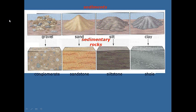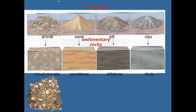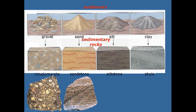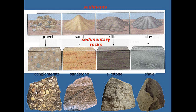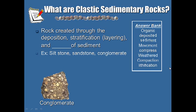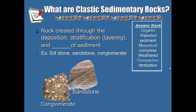If I compact and cement sand, I make a rock called sandstone. If I compact and cement gravel, I make a rock called conglomerate. If I compact and cement silt — just smaller grains of sediment — I make siltstone, which is smoother and finer grained. Sandstone has a gritty texture like sandpaper, while siltstone is smoother. And if I compact and cement clay particles, I make a rock called shale, which is even smoother and finer grained. So: conglomerate, sandstone, siltstone, and shale all form from the compaction and cementation of sediment.